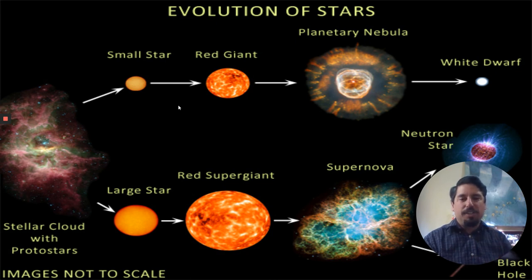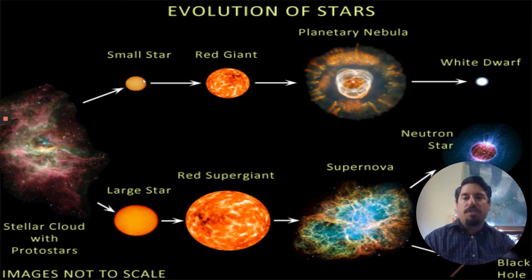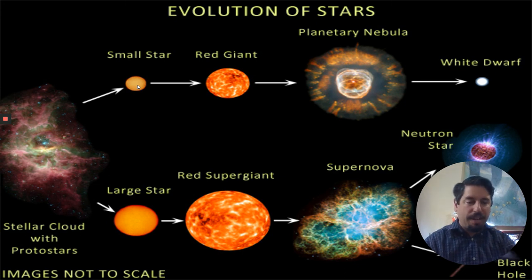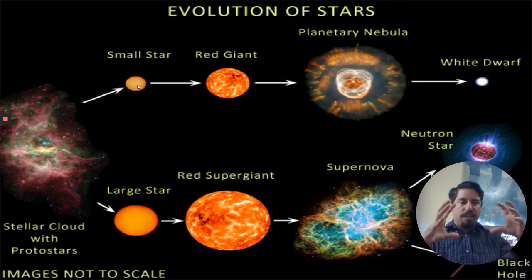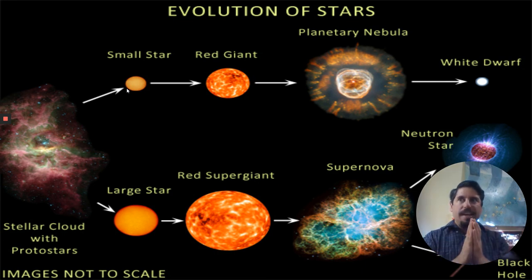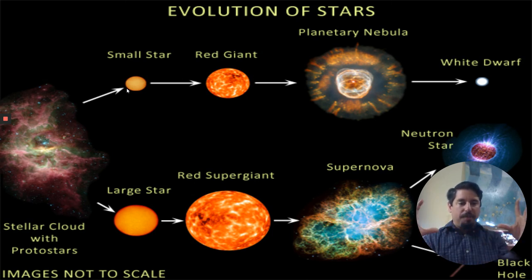The star starts fusing hydrogen into helium, releasing huge amounts of energy, and we get a star like our sun. Our sun is a low mass star — right now it is burning, turning hydrogen into helium. When you have the sun in its current stage, gravity is trying to pull it in and the energy from nuclear fusion is pushing out. So you have this explosion of energy pushing out and gravity pulling in, keeping the sun right there.